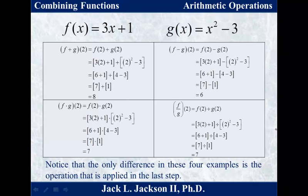Now that you're back, let's see what we have. f plus g of 2 is f of 2 plus g of 2. f of 2 is 3 times 2 plus 1, which is 7. g of 2 is 2 squared minus 3, which is 4 minus 3, equals 1. So 7 plus 1 is 8. Notice we found the output of f and g separately — 7 and 1 — then added them together.